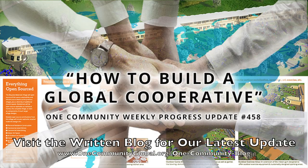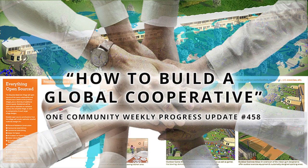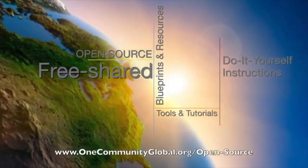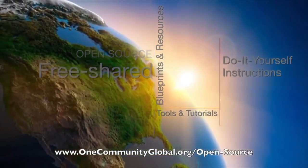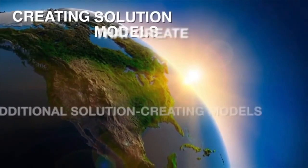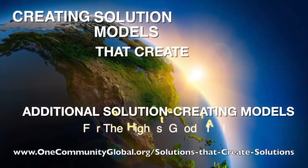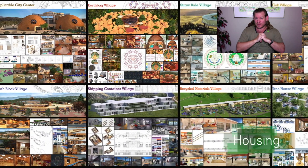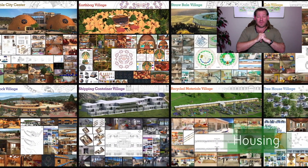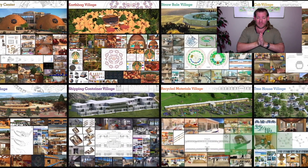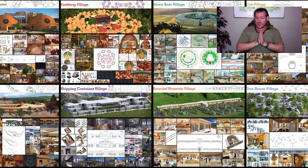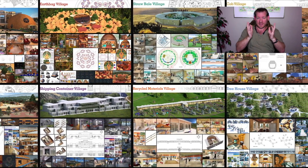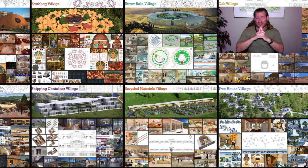How to build a global cooperative. One Community Weekly Progress Update number 458. One Community is a 501c3 non-profit organization. We are creating open source and free shared blueprints and resources, tools and tutorials, and do-it-yourself instructions for highest good living. Creating solution models that create additional solution-creating models in the service of all life on this planet. My name is Jay Sabel and I'm the Executive Director of the One Community 501c3 non-profit organization. This is our January 2nd, 2021 edition of our Weekly Progress Update.